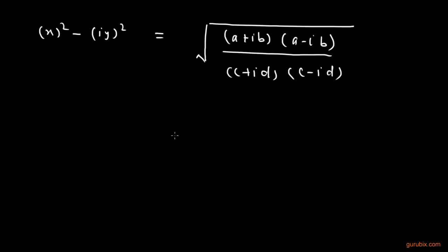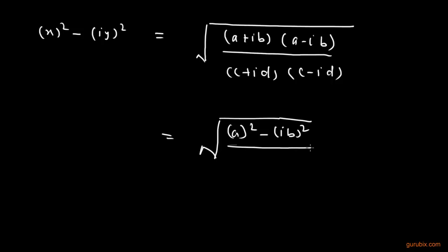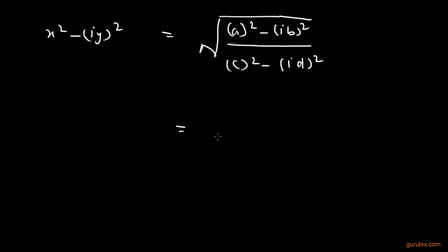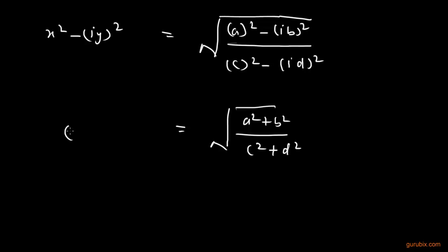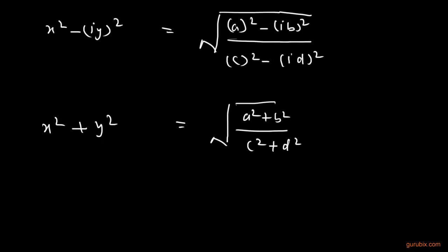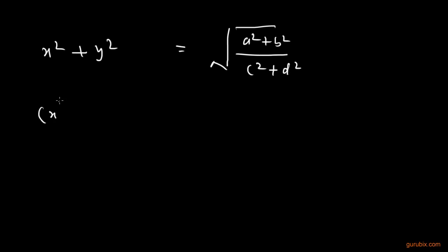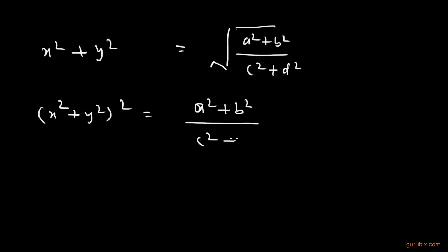Multiplying these values gives us the square root of (a squared minus iota squared b squared) over (c squared minus iota squared d squared), which simplifies to the square root of (a squared plus b squared) over (c squared plus d squared). So x squared plus y squared equals the square root of (a squared plus b squared) over (c squared plus d squared). Now squaring both sides, we get (x squared plus y squared) squared equals (a squared plus b squared) over (c squared plus d squared).